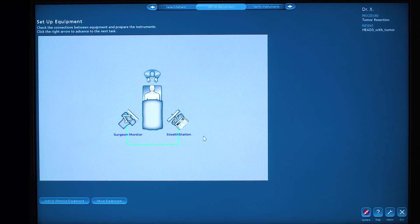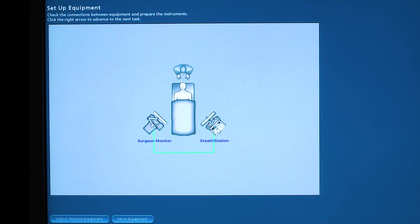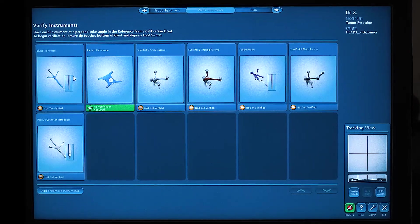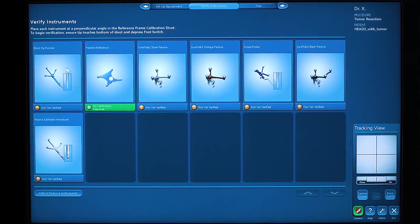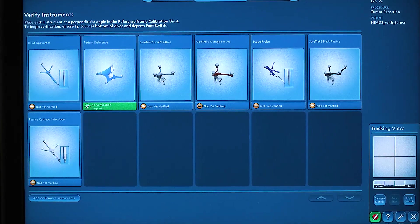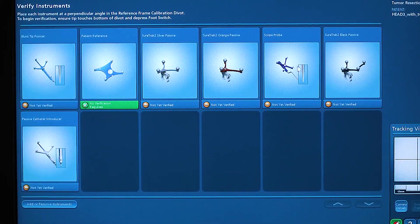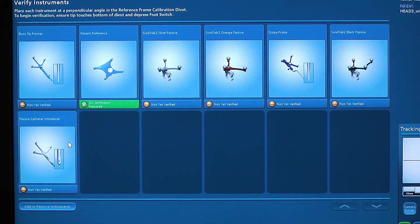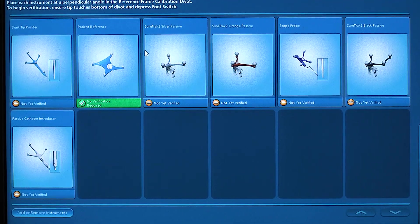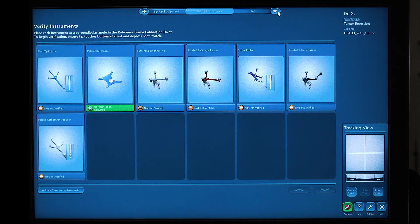To validate that your equipment is connected properly, you'll see a green indicator line connecting the surgeon monitor and the stealth station. Hit the next button. You'll see the various instruments that you may need for this particular procedure: the blunt tip, Buholz pointer, patient reference frame, the SureTrack connectors, scope probe, or passive catheter introducer for shunt placement. In this instance we're only going to use the blunt tip and the patient reference frame. Again, step forward in the navigation pane to planning.